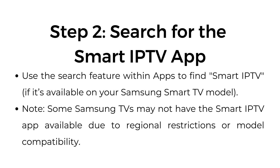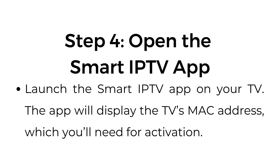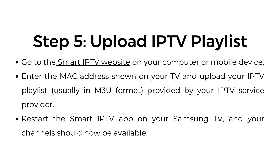Note: some Samsung TVs may not have the Smart IPTV app available due to regional restrictions or model compatibility. Step number three, install the app. Select the Smart IPTV app and choose Install. Step number four, open the Smart IPTV app. Launch the Smart IPTV app on your TV. The app will display the TV's MAC address, which you will need for activation.